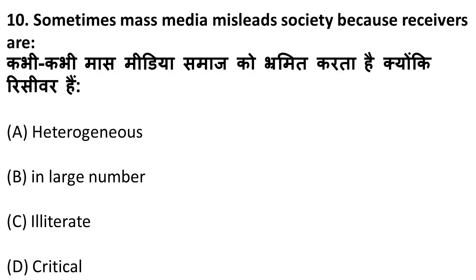Next question: sometimes mass media misleads society because receivers are what? The biggest disadvantage of mass media is that its audience is heterogeneous — they speak different languages, are from different age groups, different religions, and different regions. This heterogeneous nature of mass media audiences may sometimes mislead society.